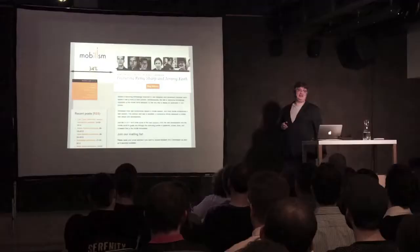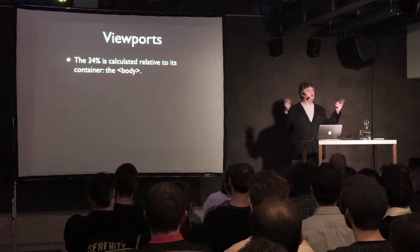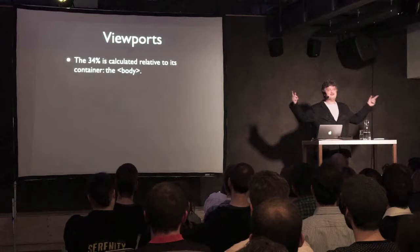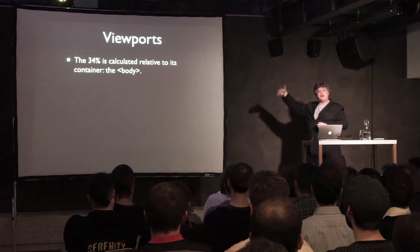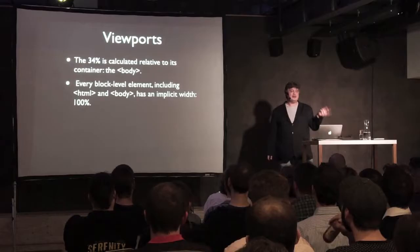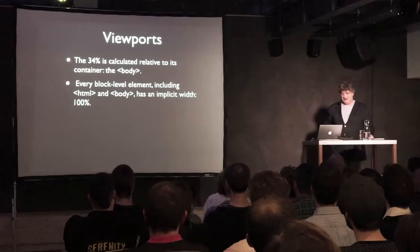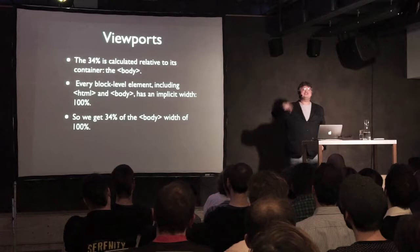A general CSS rule is that a percentage width is calculated relative to the container element. In this case we have a div that's a child of the body, so the 34% is calculated relative to the width of the body. Which raises the question: what is the width of the body? Another fundamental rule: every block-level element, including HTML and body tags, has an implicit width of 100%. So 34% of the body width of 100%, and the body width is calculated relative to the HTML element, which is also 100%.